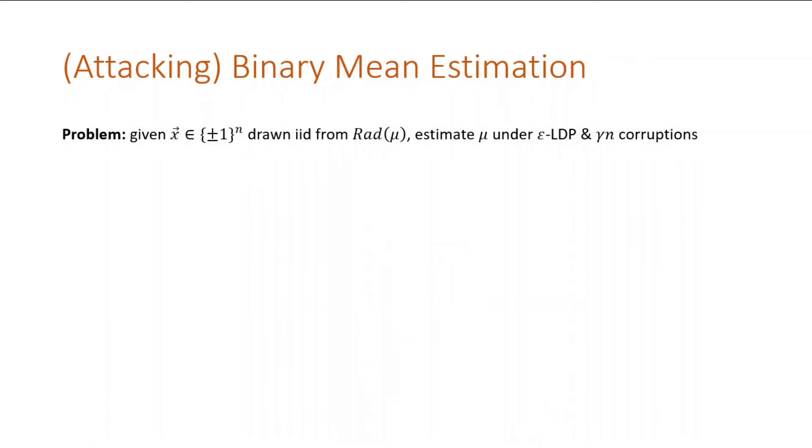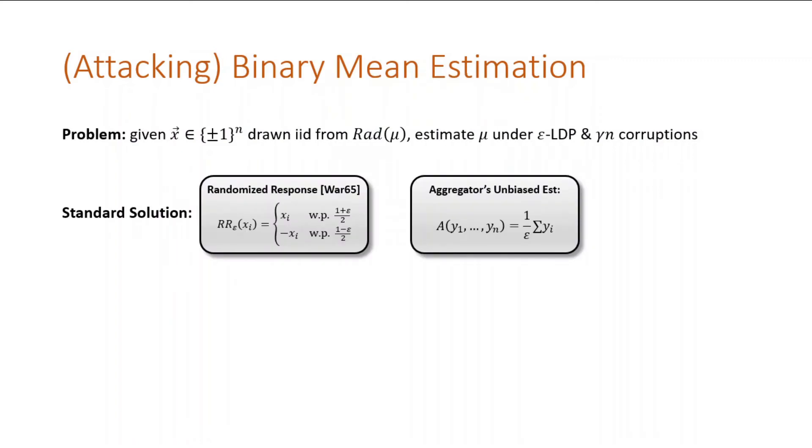To make this more concrete, let's explore binary mean estimation. Here, everyone has a signed bit drawn from Rademacher mu, and we'd like to know mu under local privacy, where Rademacher mu is the distribution over plus minus one with mean mu, and mu uniquely identifies the distribution. The standard solution for a locally private mean estimation is randomized response. Here, each user flips their bit with probability close to half. The aggregator collects the messages and can compute an unbiased estimate.